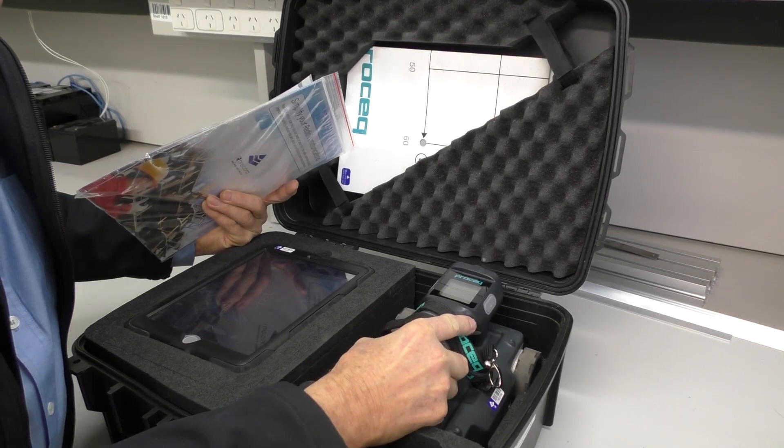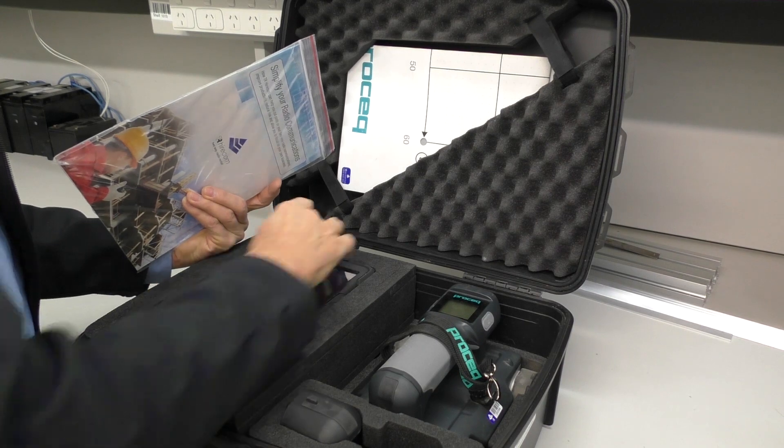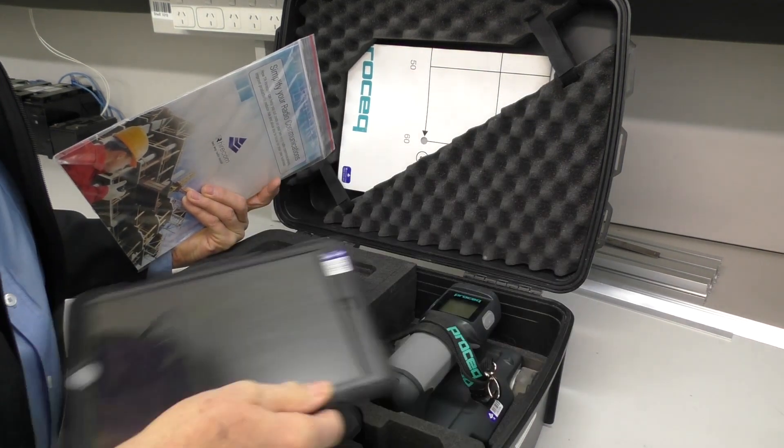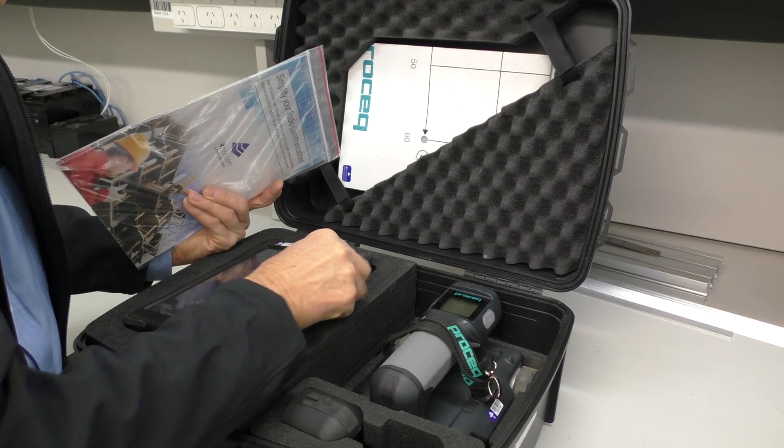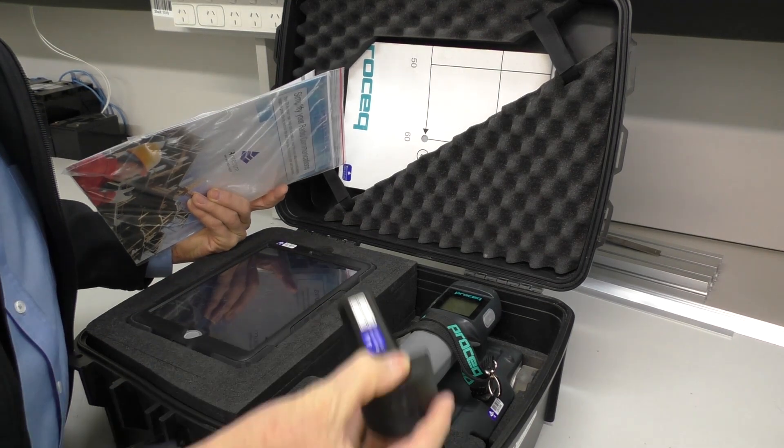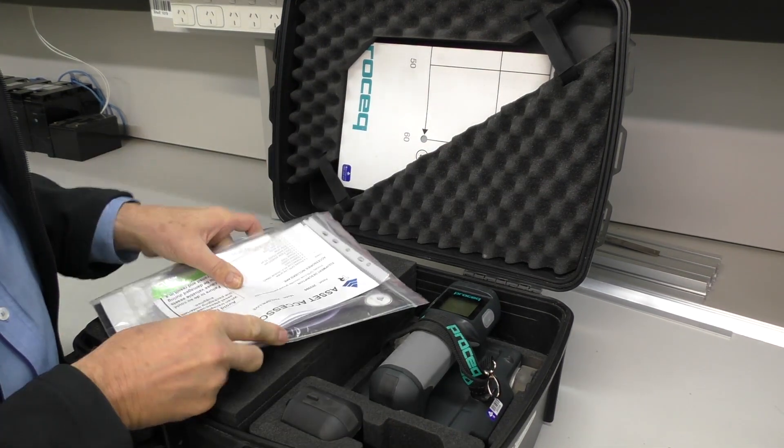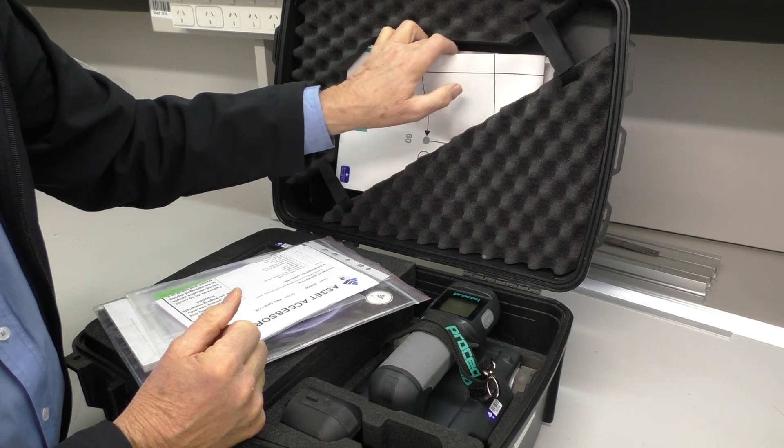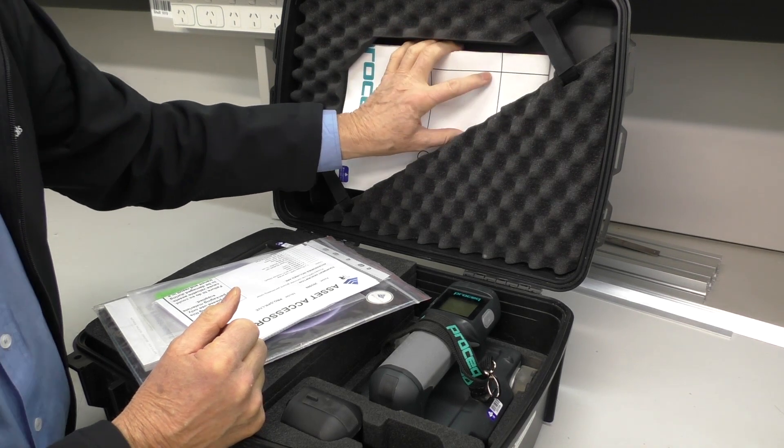The kit contains a scanner, an iPad, plus power supplies and chargers, spare battery, documentation, and these sheets here which we'll go into a little later for doing an area scan.